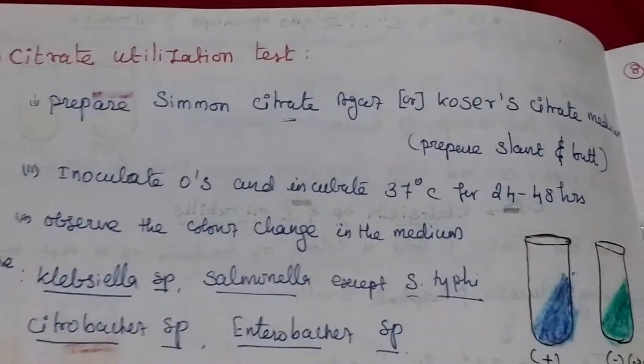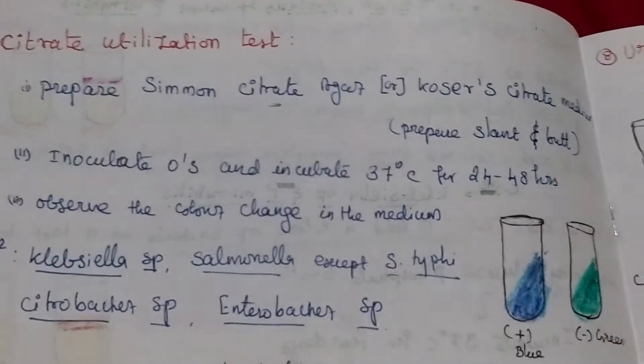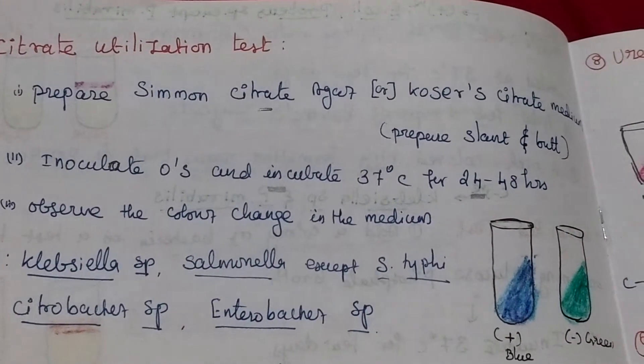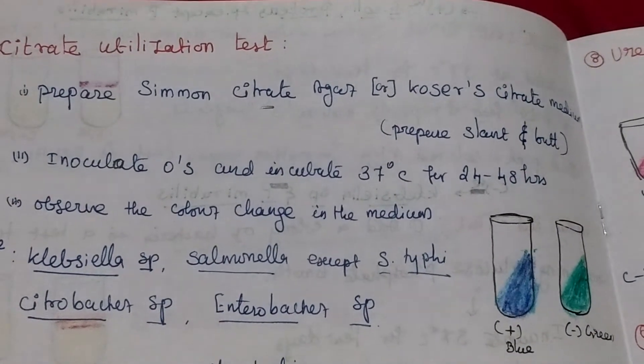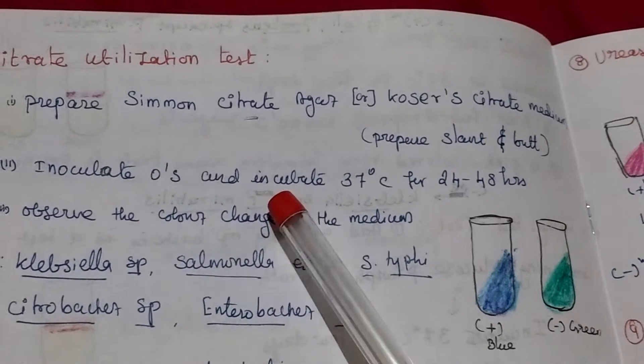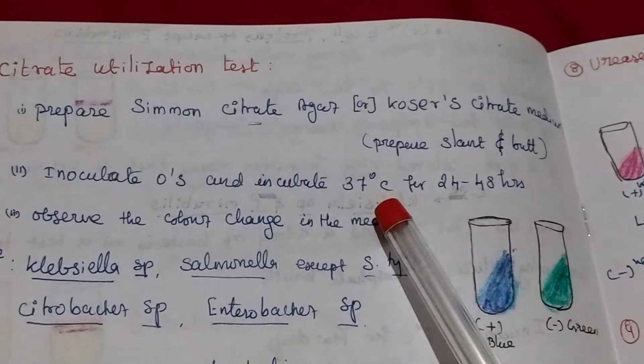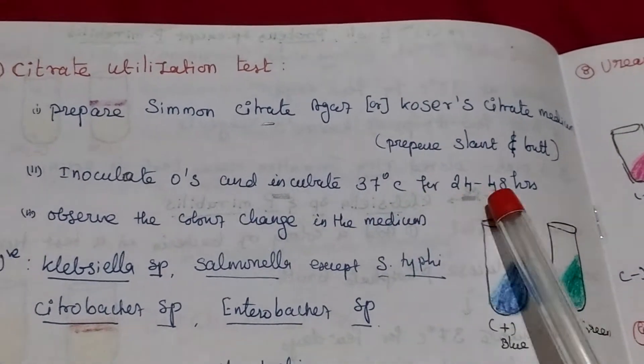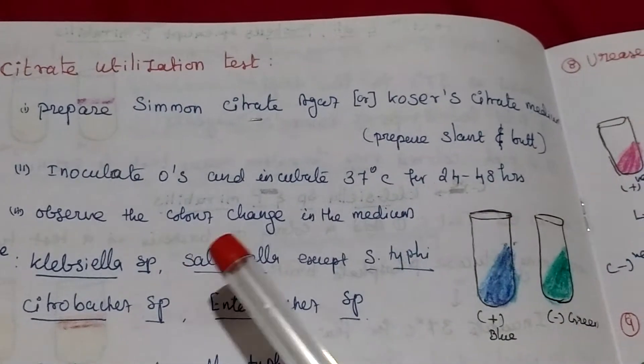Fifth test, citrate utilization test. Here we are preparing Simmon's citrate agar medium slant or butt. Inoculated organism and incubated 37 degrees Celsius for 24 to 48 hour. Observe that color change.